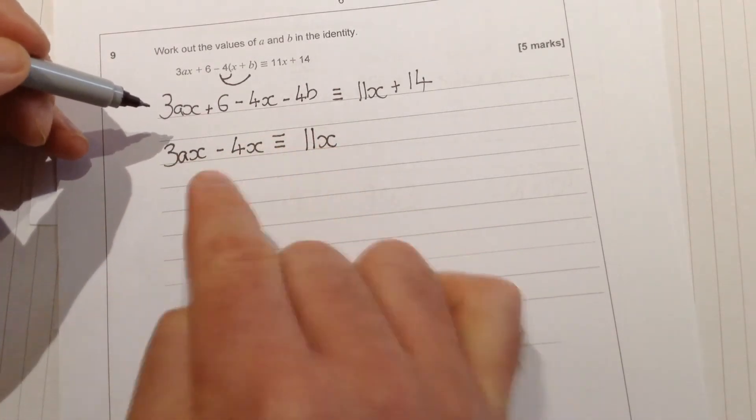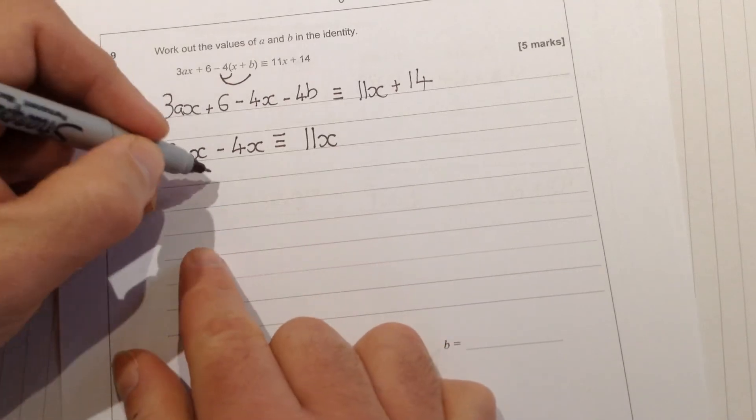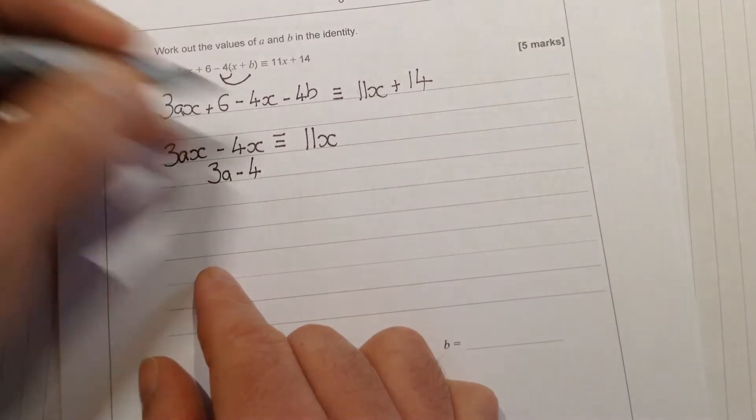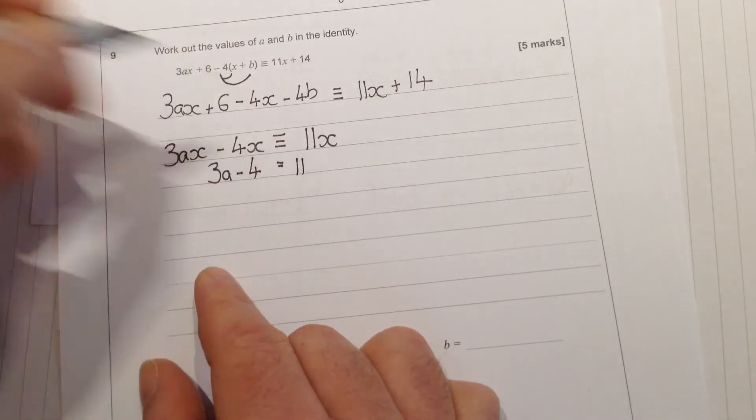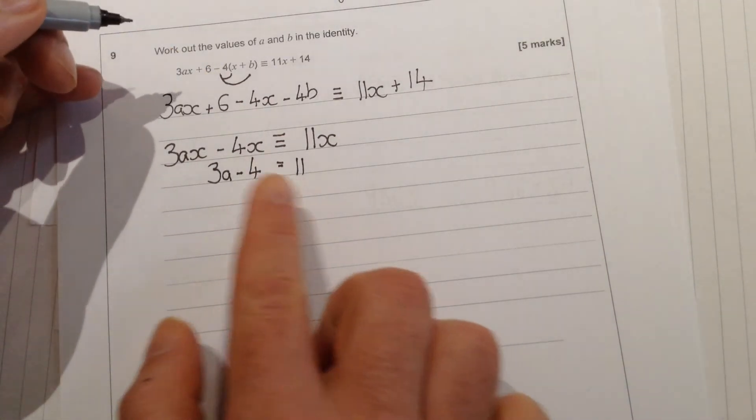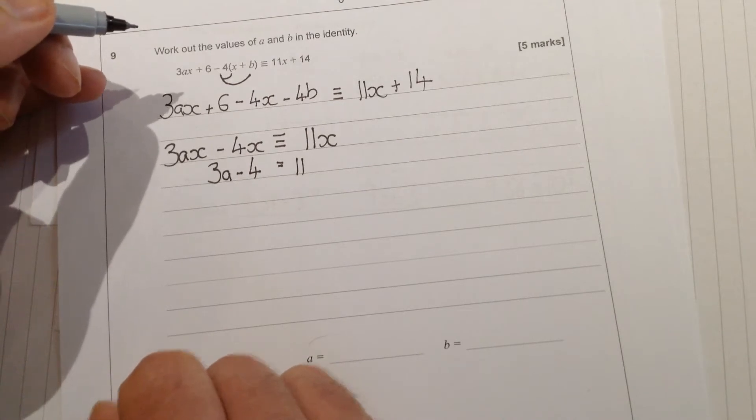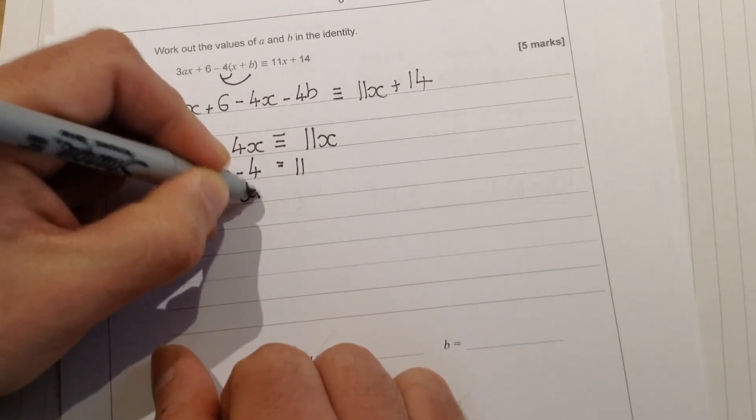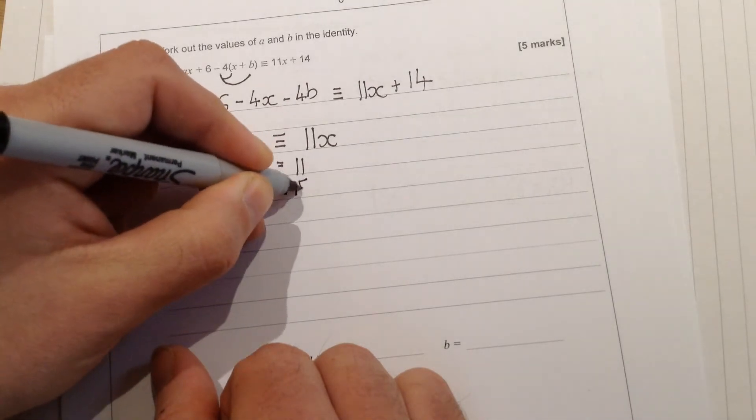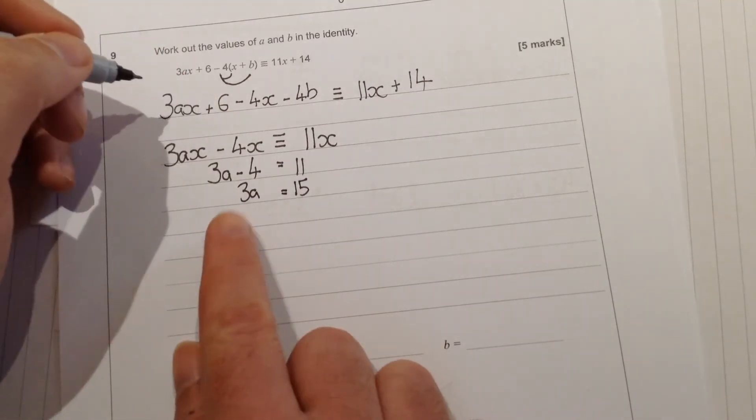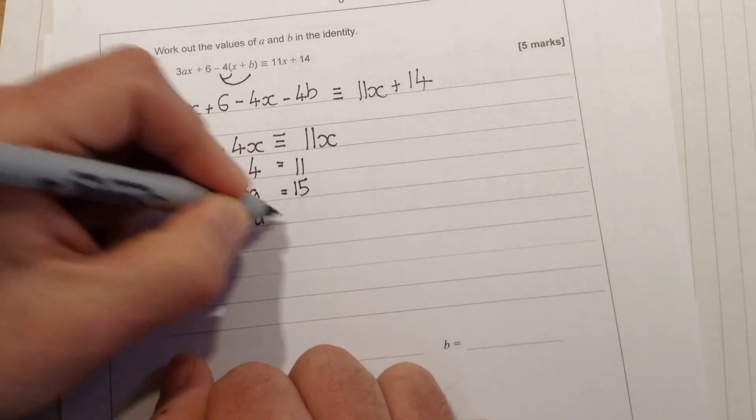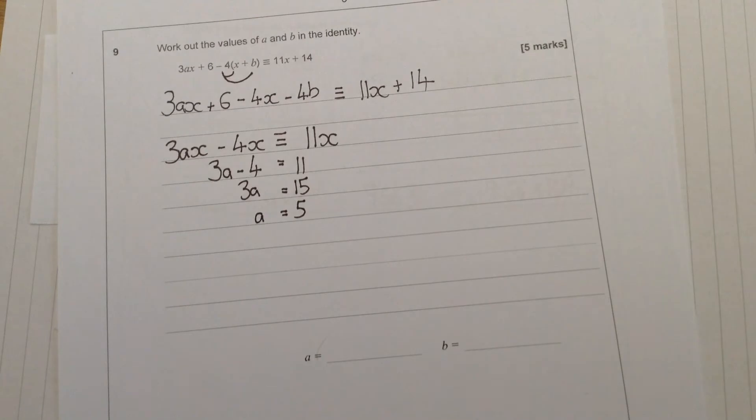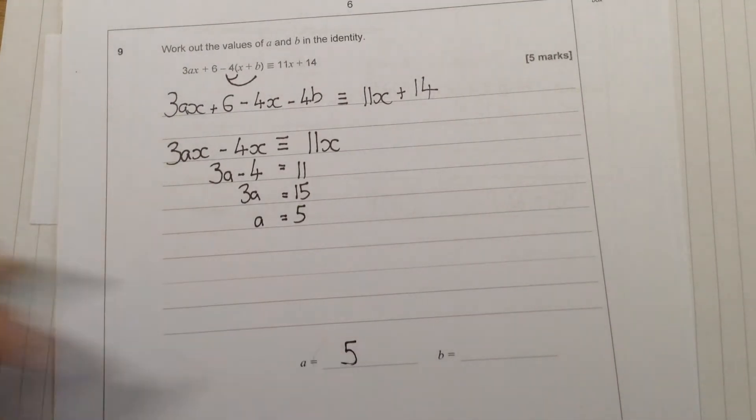So I need to try and find the value of a here that would make this equal 11x. Well the x can sometimes maybe get a little bit confusing, so actually what I'm trying to say here is that I need 3a minus 4 to equal 11. So I've just got a little equation to solve. If I add 4 to both sides, I get 3a equals 15, then I would need to divide by 3 to give me a equals 5. So I've found the value of a and I can put that down at the bottom.